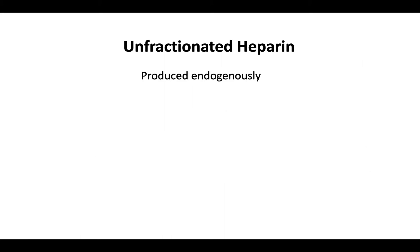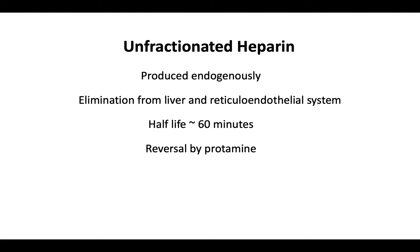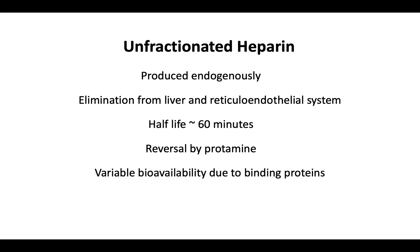Unfractionated heparin is produced endogenously by basophils and mast cells. Commercially available heparins come from porcine and bovine sources. Elimination is from the liver and reticuloendothelial system. Its half-life is about 45 to 60 minutes; after cessation, the APTT should normalize within 3 to 4 hours. Unfractionated heparin undergoes reversal by protamine, and has variable bioavailability due to competitive binding by plasma proteins, including platelet factor 4 and other acute phase reactants.